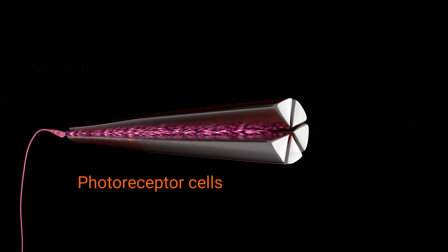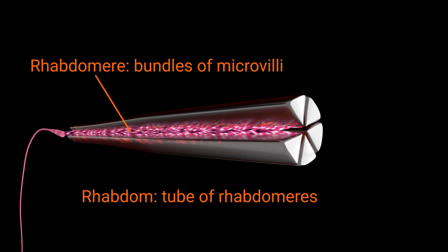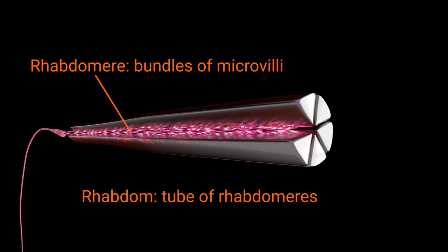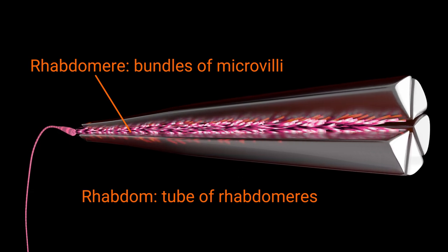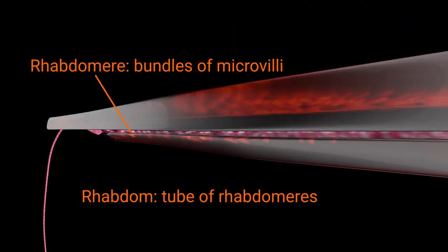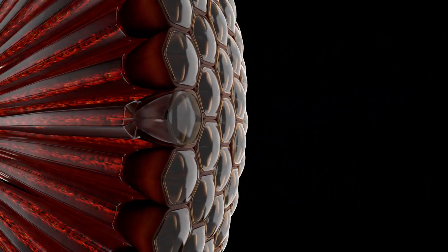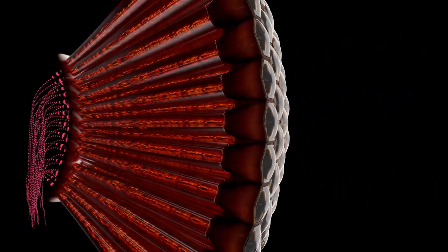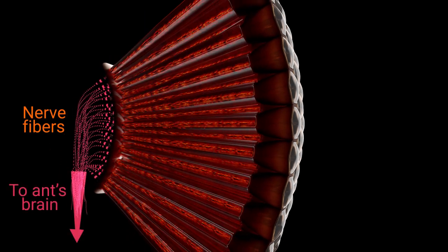These cells are kind of facing inwards and they have bundles of microvilli that extend into the central axis. These bundles are called rhabdomeres. And together this tube of rhabdomeres is called the rhabdom. This is where the light is actually captured, because the microvilli here have adapted to convert photons of light into electrical signals. The signals are then sent down to a bundle of axons and into nerve fibers, which send the signal to the ant's brain.